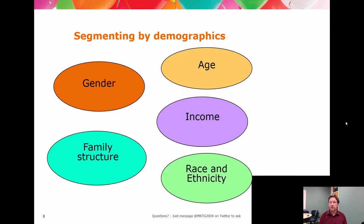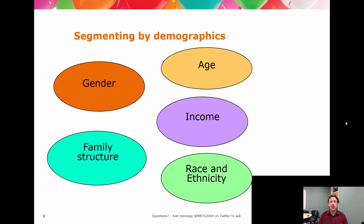In terms of demography, there are a series of elements here. If you're starting to get a sense for age, gender, family structure — these are variables that we had raised in consumer behaviour. And as mentioned in consumer behaviour, you can use a lot of CB theory to underpin and support your segmentation approach.